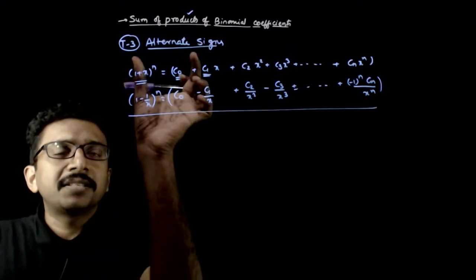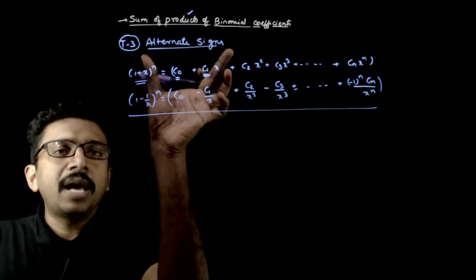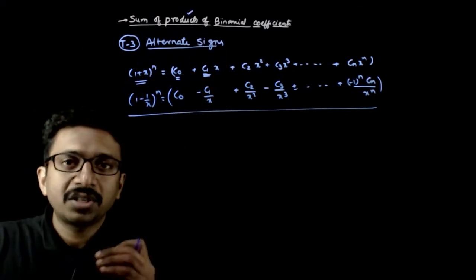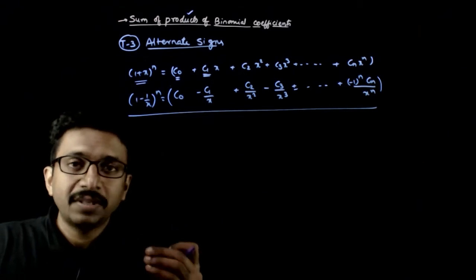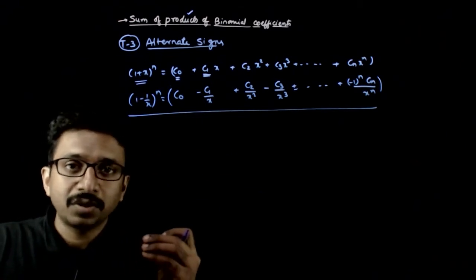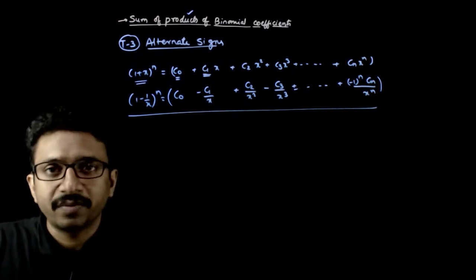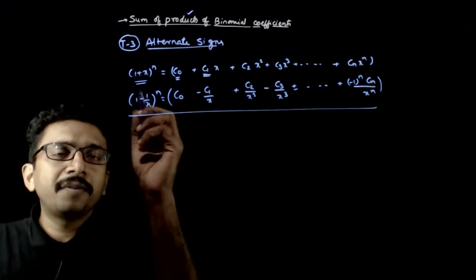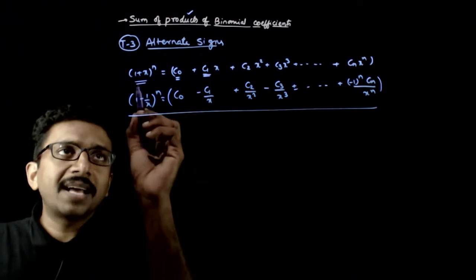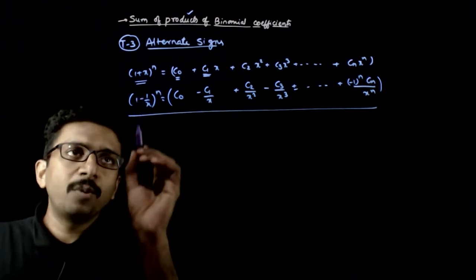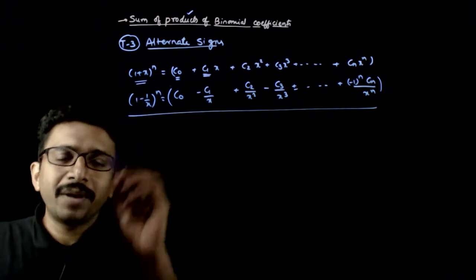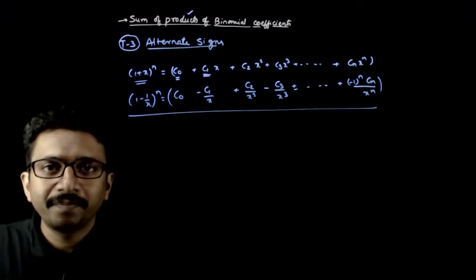Next we will discuss Type 3, where you have alternate signs: c0 square minus c1 square plus c2 square minus c3 square, and so on. For this, I will consider (1+x)^n and (1 - 1/x)^n.